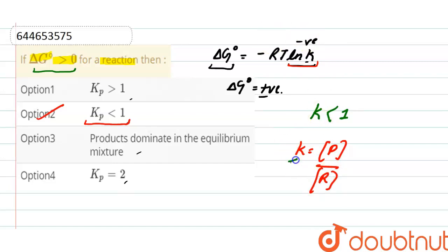value of equilibrium constant is less than one, that means the reactant concentration is more than product concentration. So this option will automatically cancel out because here the statement is 'products dominate in the equilibrium mixture' - no, this is